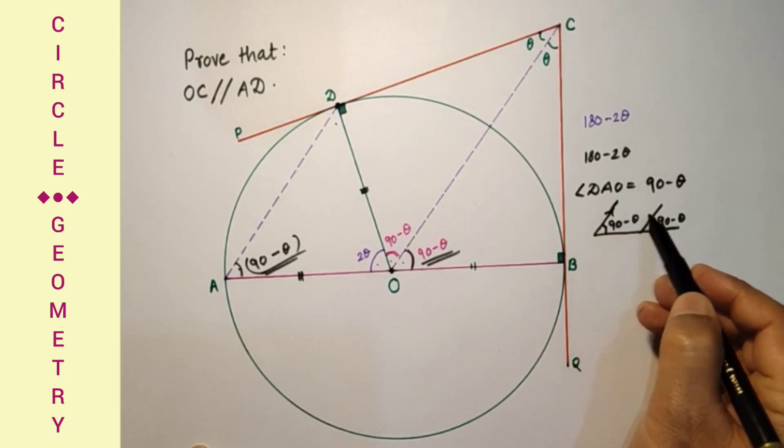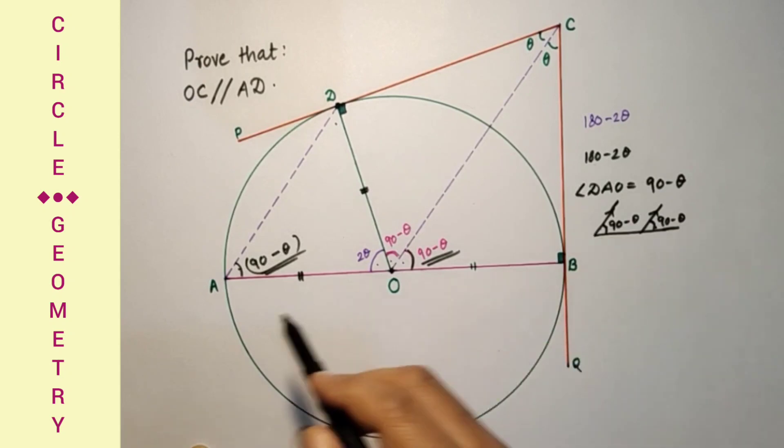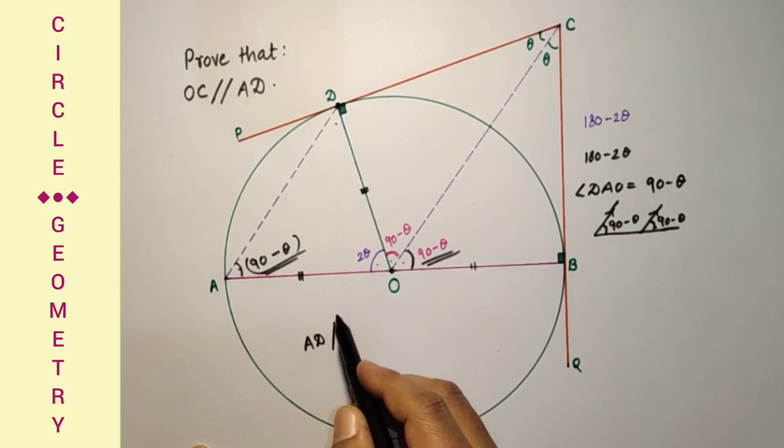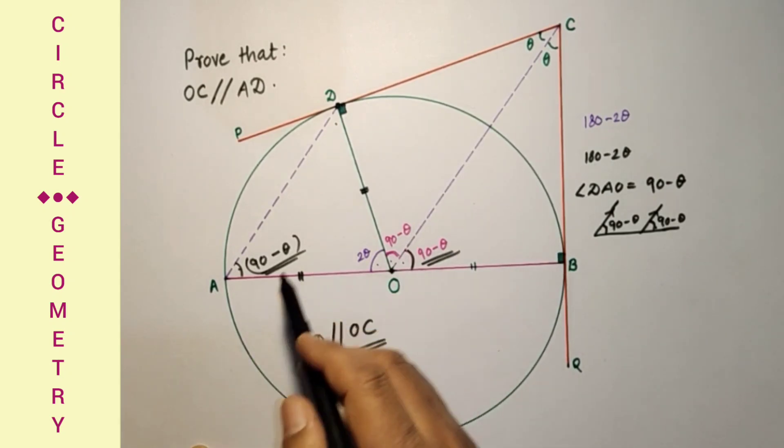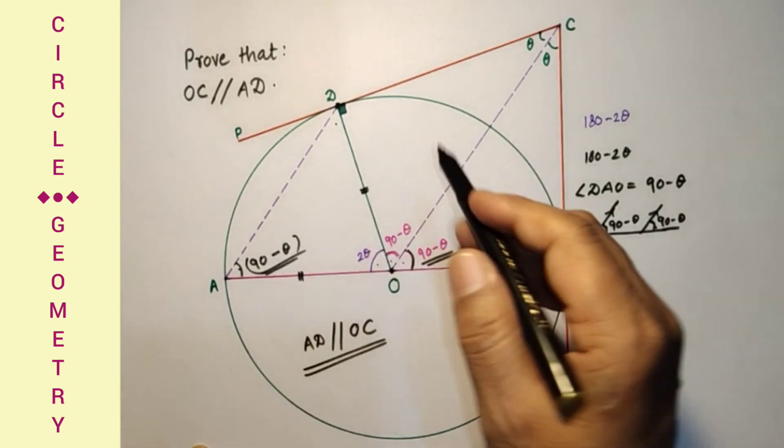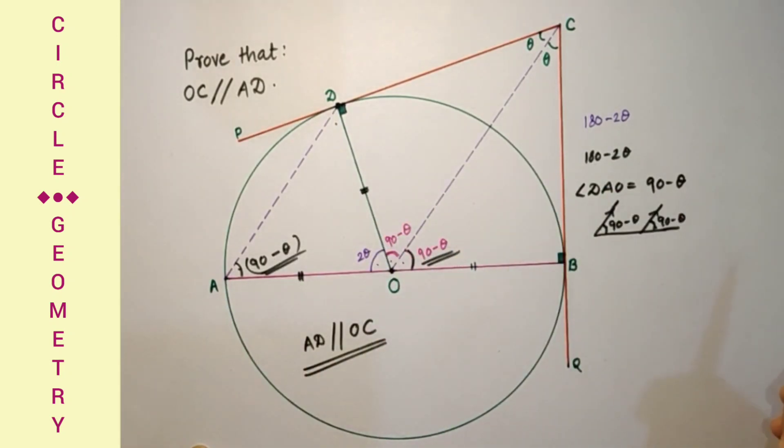We can say that these two lines are parallel. Therefore AD is parallel to OC. This was a very simple question, and we proved that these AD and OC are parallel to each other.